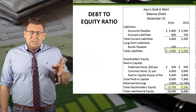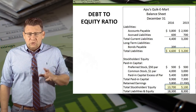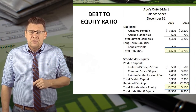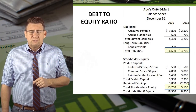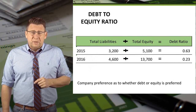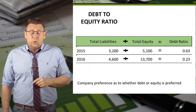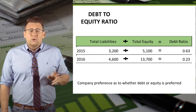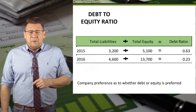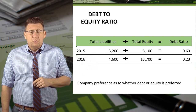Here is the liability and equity section of the balance sheet. We'll use the total liabilities and total stockholders' equity to determine the debt to equity ratio. For 2015, total liabilities divided by total equity gives us a debt to equity ratio of 0.63. For 2016, total liabilities divided by total equity gives us a debt to equity ratio of 0.23.